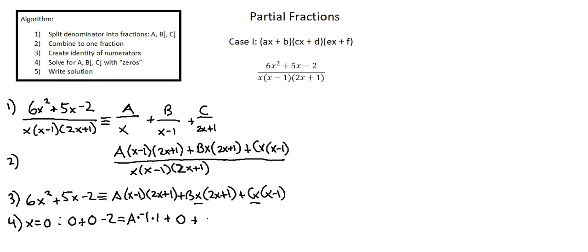We're multiplying in the C term by x. When we input a zero for that x the entire term will become zero. And now we can simplify to negative 2 equals negative A and A equals 2.